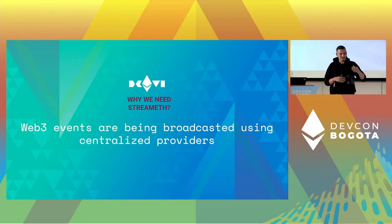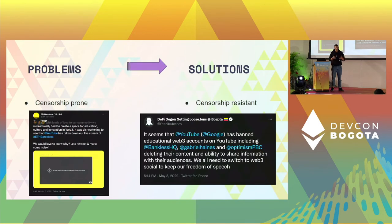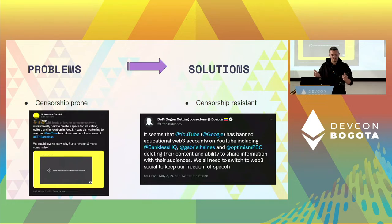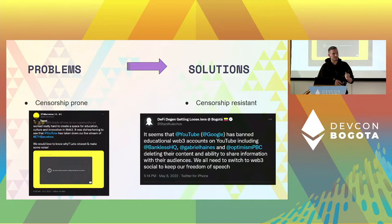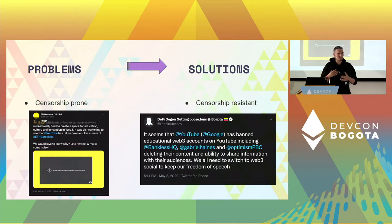StreamEath should be a good first step to help communities decouple from these services. The first problem with centralized platforms is that YouTube and Twitch are censorship prone. At ETH Barcelona, the live stream was taken down because of copyright issues — sometimes music segments with copyright can slip into the production and your whole stream gets taken down. ETH Barcelona had one day without streaming. There was also a YouTube account taken down because they were talking about Web3 content.